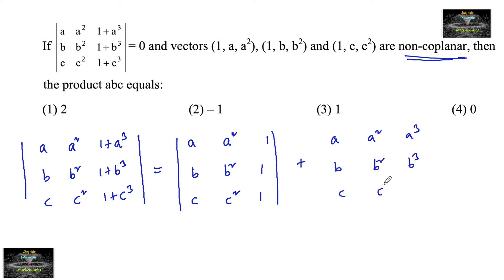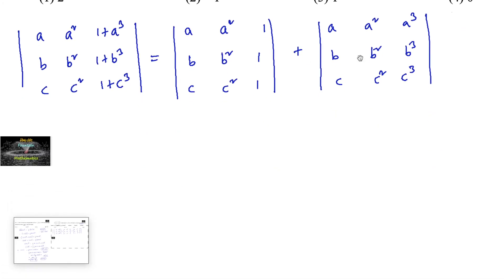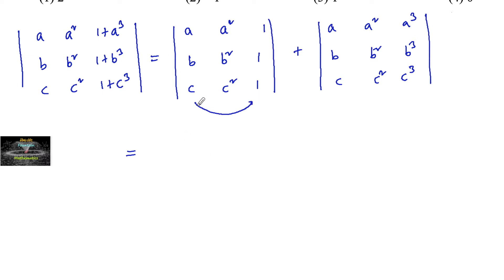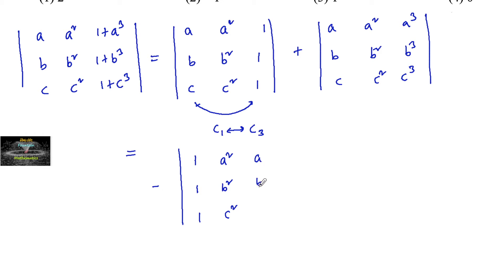In the first determinant, we interchange the first column with the third column (C1 with C3). This gives us a negative sign, resulting in minus of the determinant with rows (1, 1, 1), (a², b², c²), (a, b, c).